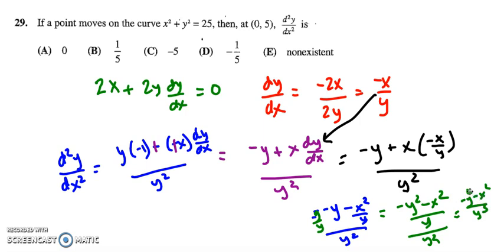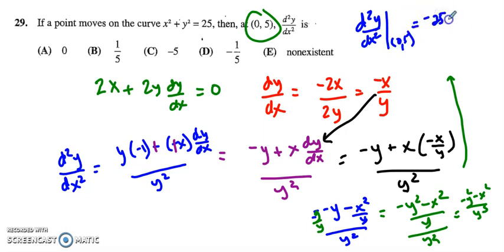To simplify this, I will multiply the first term by y over y to get a common denominator in my numerator, and then I will have negative y squared minus x squared over y all over y squared, which is negative y squared minus x squared over y cubed. Finally, I can plug in the point (0,5). If I have the second derivative at the point (0,5), I will get negative 25 minus 0 over 125. This simplifies to negative 1/5, and D is my answer.